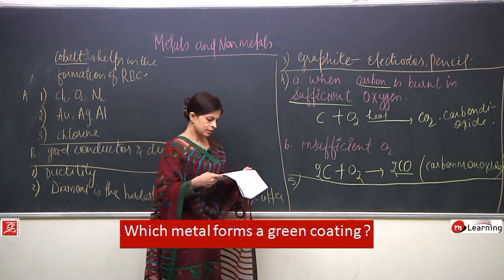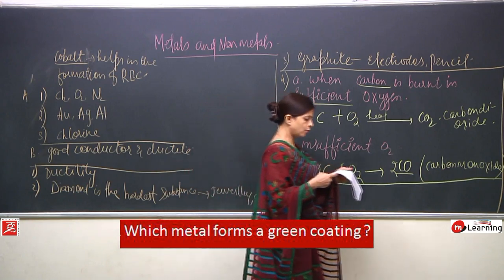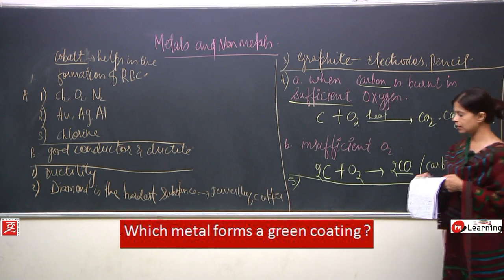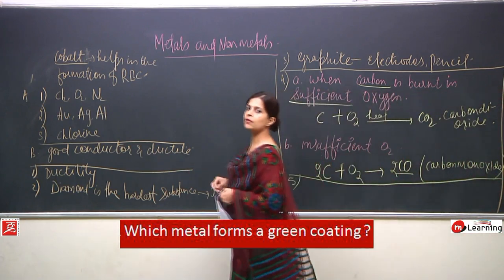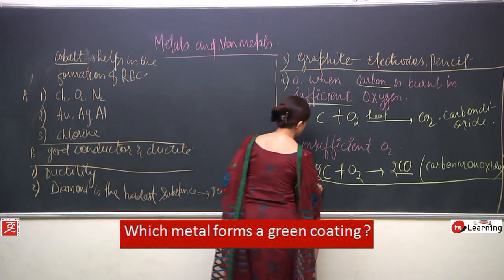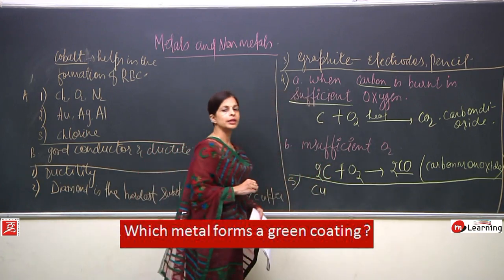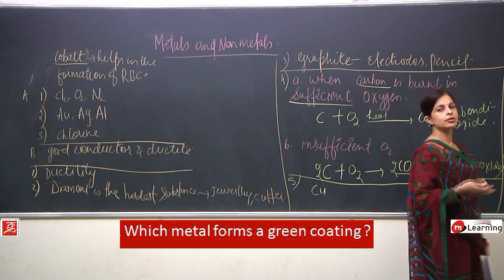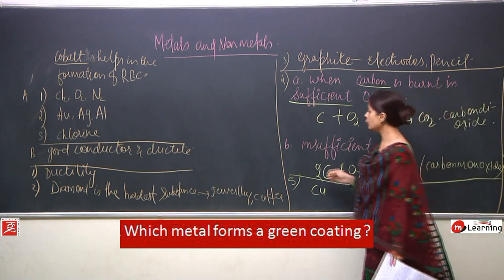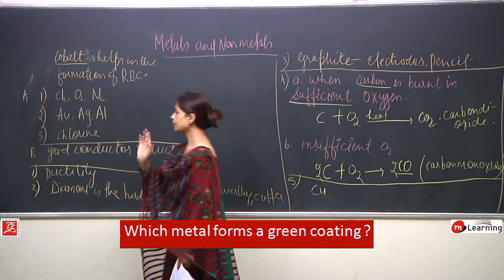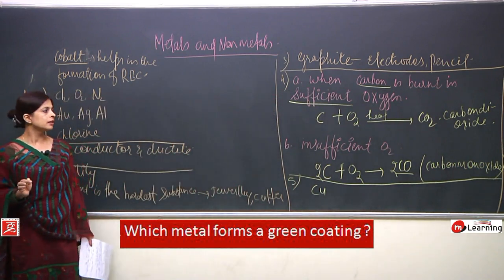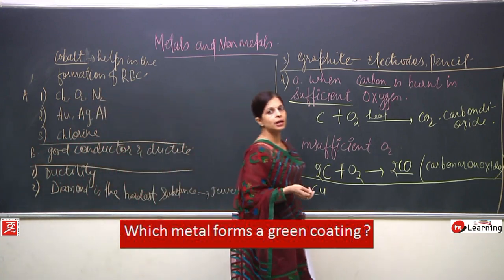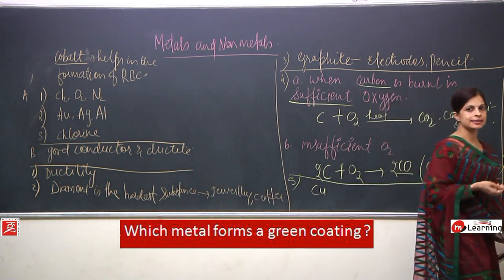Question 5: which metal forms a green coating? Copper forms a green coating when it reacts with carbon dioxide and oxygen from the air. The greenish layer formed is composed of copper carbonate and copper hydroxide.